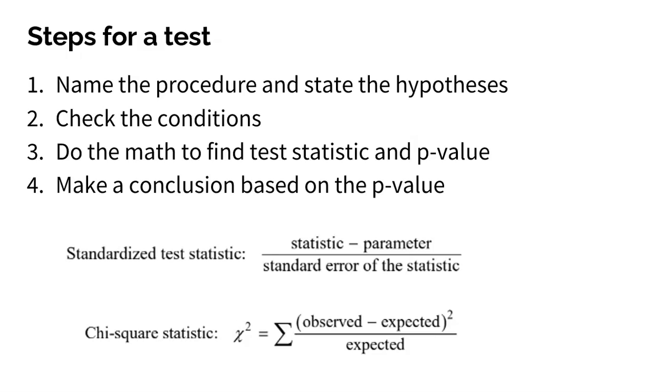We have a couple of different types of test statistics. The first is a Z score or a T score. This is a standardized test statistic. This is found by taking your statistic, that's what you found in your sample, minus the parameter, that's what you thought, all divided by the standard error of the statistic.